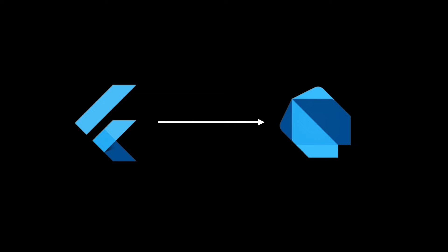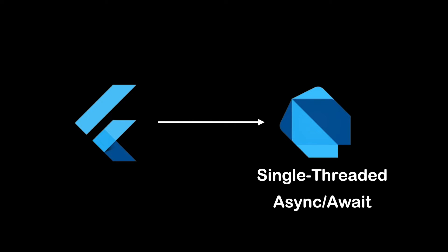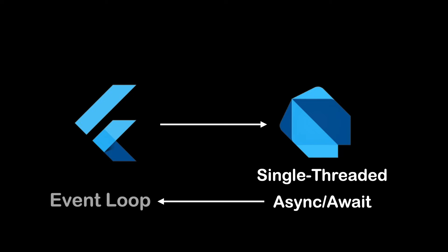Flutter uses Dart programming language. Dart is a single-threaded programming language by design, and because it is a single thread, everywhere we have asynchronous code. Many library functions return future objects and we can register handlers to respond to events such as mouse clicks, file I/O completions, timer expirations, and so on. We can say that Dart handles asynchronous programming by event loop.